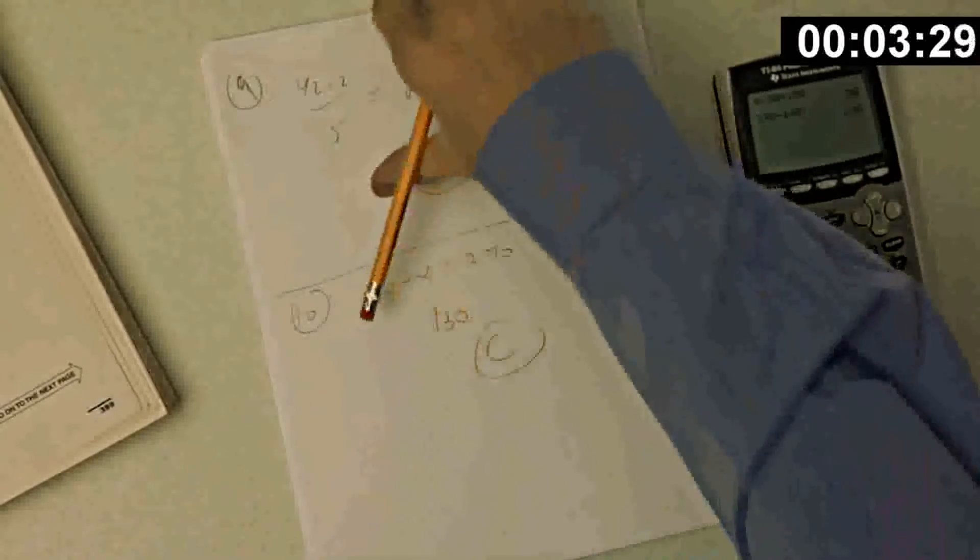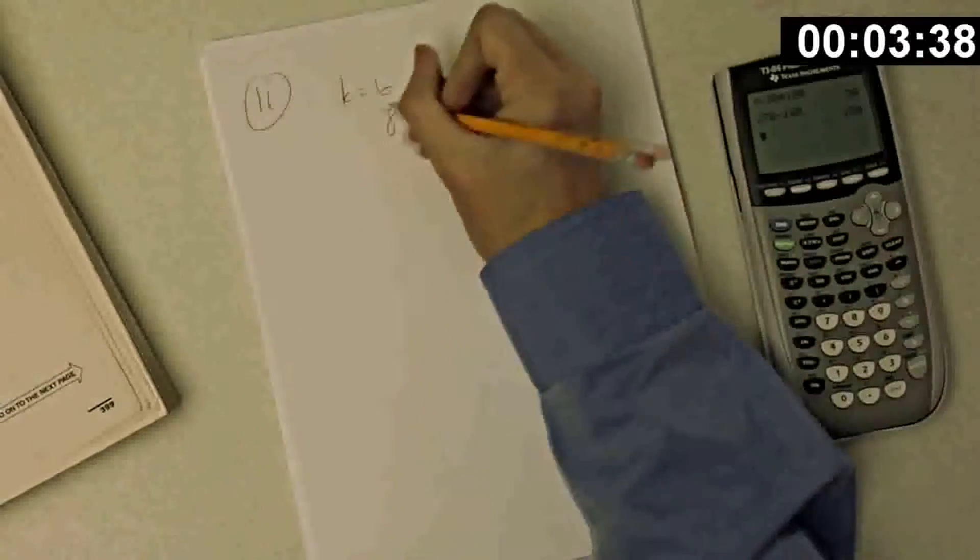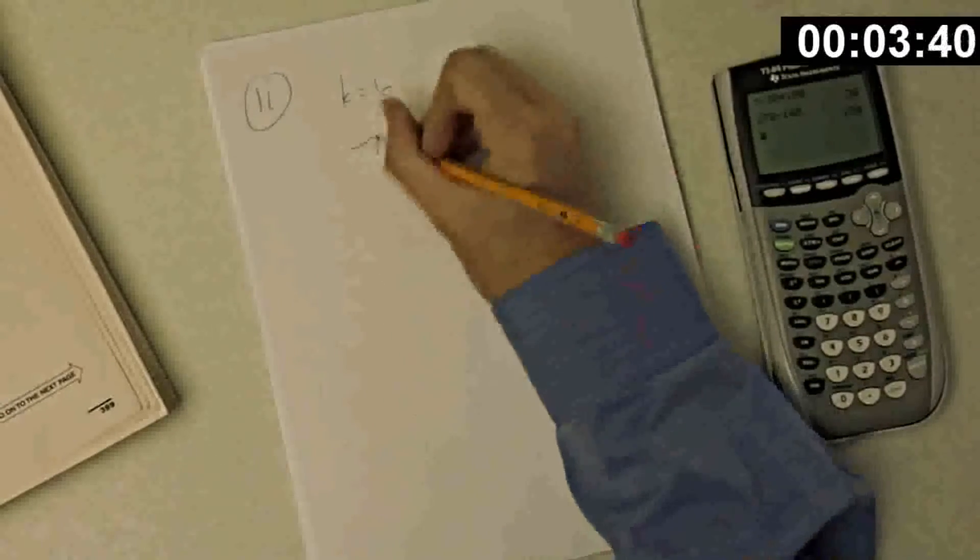Number 11: When the positive integer k is divided by 7, the remainder is 6. So I'll let k be 6. What is the remainder when k plus 2, that's 8, is divided by 7? The remainder is 1. That's choice B.